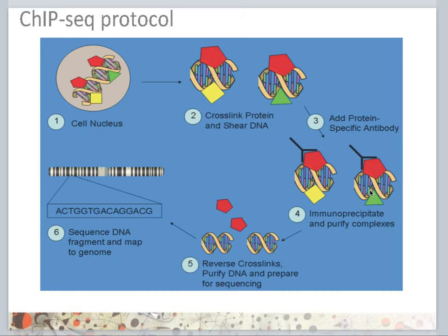How does the ChIP-seq protocol work? First, cell nuclei are isolated. The nuclear membrane is ruptured. Proteins are cross-linked with the DNA to ensure that they stay bound to the DNA. Then an antibody is used to fish out the proteins of interest. The cross-linking is then reversed, and the DNA fragments obtained are sequenced on a high-throughput sequencing machine.